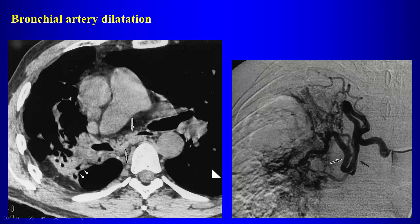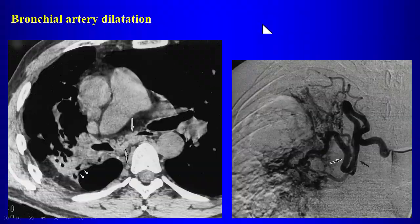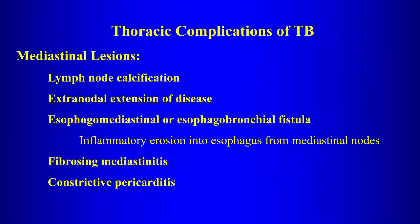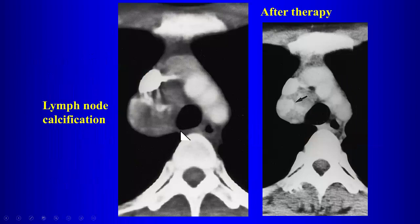Bronchial artery dilatation: with fibrotic lung disease from any cause, there can be hypertrophy of bronchial arteries and neovascularization to the fibrotic lung. These arteries are under systemic pressure, so hemorrhage here is worse than from pulmonary artery branches. This bronchial artery dilatation can result in life-threatening hemorrhage and is also a complication of tuberculosis.